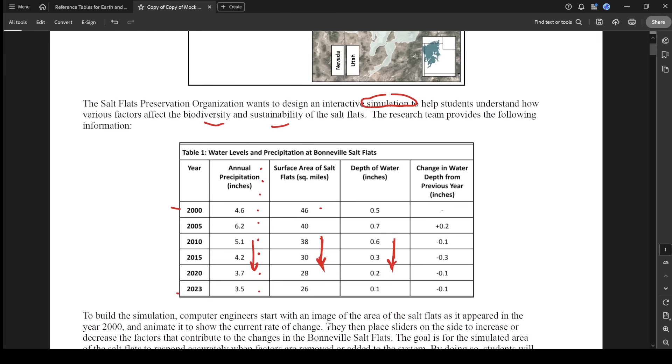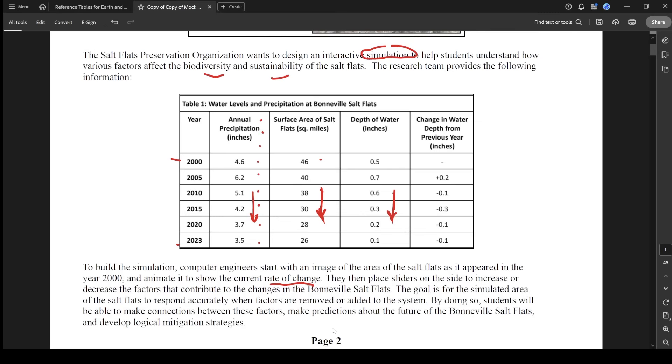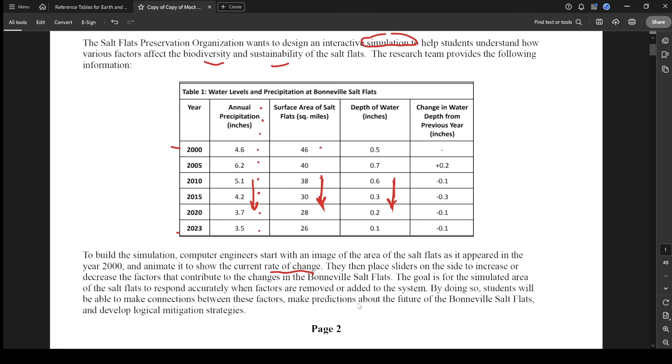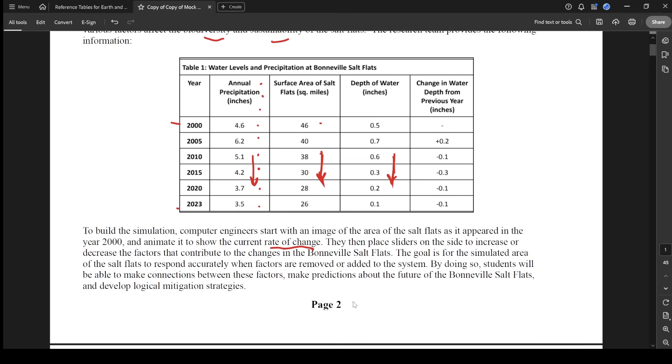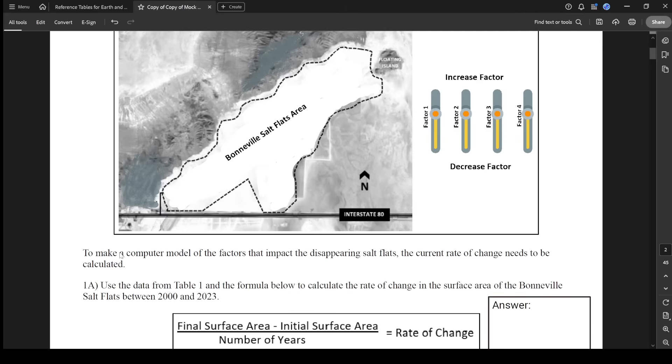So to build the simulation, computer engineers start with an image of the area of the salt flats as it appeared in the year 2000 and they animate it to show the current rate of change. They then place sliders to increase or decrease the factors that contribute to the changes. The goal is for the simulated area to respond accurately when the factors are removed or added. So they're going to make this little computer simulation to show like if you increase the precipitation, what would happen? If you go over a certain amount of years, what would happen to the depth and the square miles of surface area.